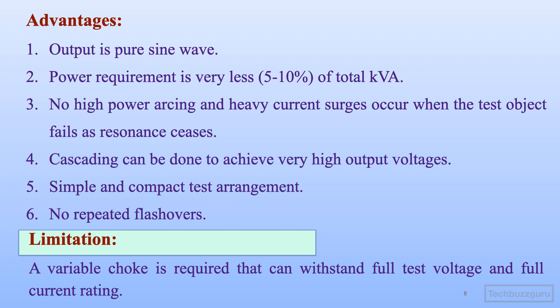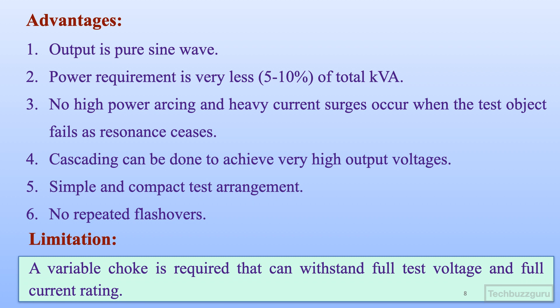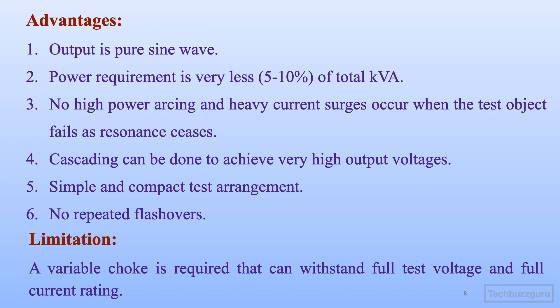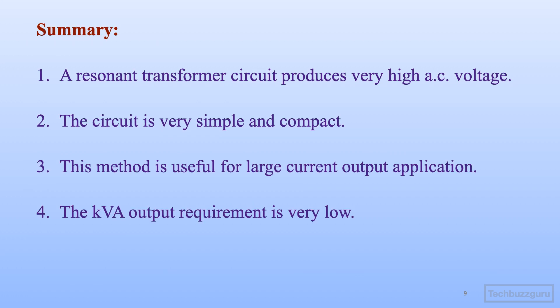One of the clear limitations of this circuit is that a variable choke is required that must withstand the full test voltage and current rating. During series resonance, the rising current flows through the external choke as well. The voltage magnification appearing across the test object also appears across the transformer leakage inductances and the variable choke. Therefore, these components must be rated to carry the full test voltage as well as the full current.